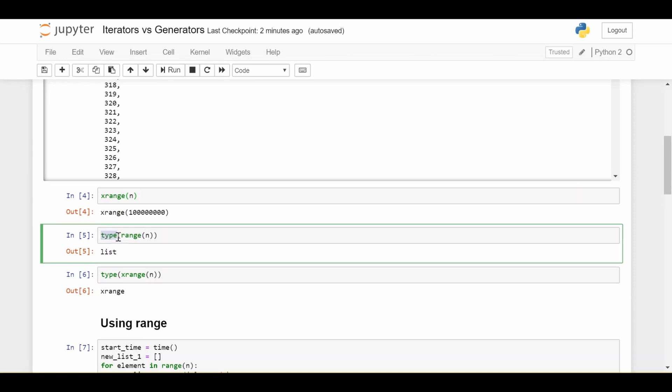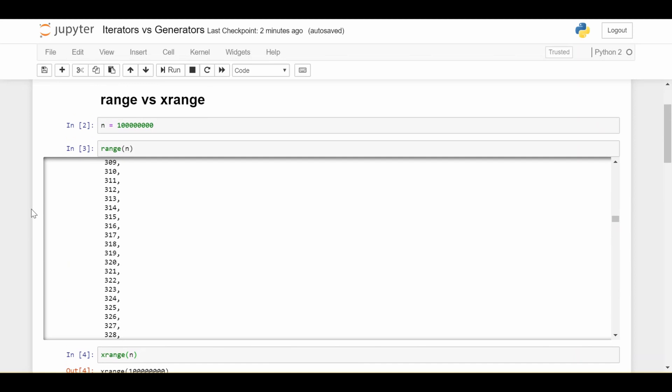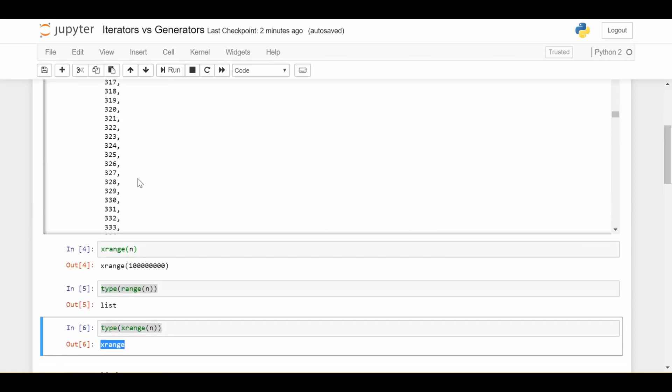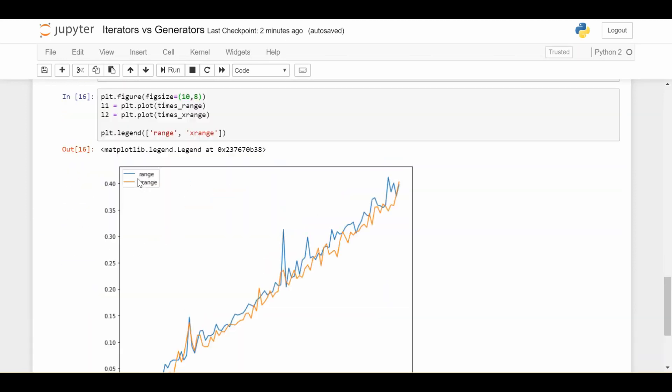Now, if we do xrange n, we don't get a massive list. We just kind of get something back that says xrange 100 million, which is curious. Let's investigate further. Let's do a type on both of these things. So if we do type on range n, we get what we would expect. It's a list, a very big list. If we do type on xrange n, it says it's a type called xrange. It's not a list. In fact, it's really a generator. It's kind of like a factory that's going to give us the numbers between 0 and 100 million minus 1 as we need them, rather than generating them all at the same time, which is what we see with range.